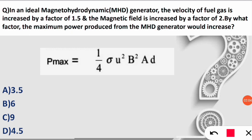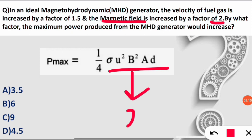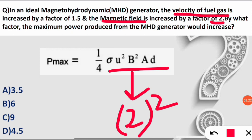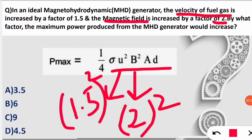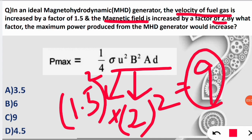Now let's solve the question. The magnetic field B is increased by a factor of 2, so we write 2². The velocity U is increased by a factor of 1.5, so we write 1.5². We simply multiply 1.5 squared by 2 squared: 2.25 × 4 = 9. So the maximum power will increase by 9 times the initial power when the magnetic field is doubled and the fuel gas velocity is increased by 1.5.